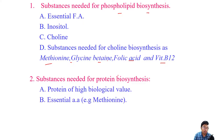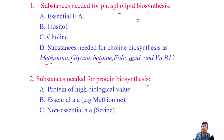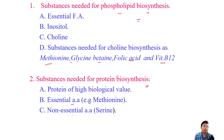Substances needed for protein biosynthesis include proteins of high biological value, methionine, and non-essential amino acids such as serine. These lipotropic factors, if consumed in adequate amounts, promote phospholipid biosynthesis and protein biosynthesis, thereby helping removal of triacylglycerol from the liver. So lipotropic factors prevent fatty liver, and some amino acids can prevent fatty liver simply by maintaining a proper diet.